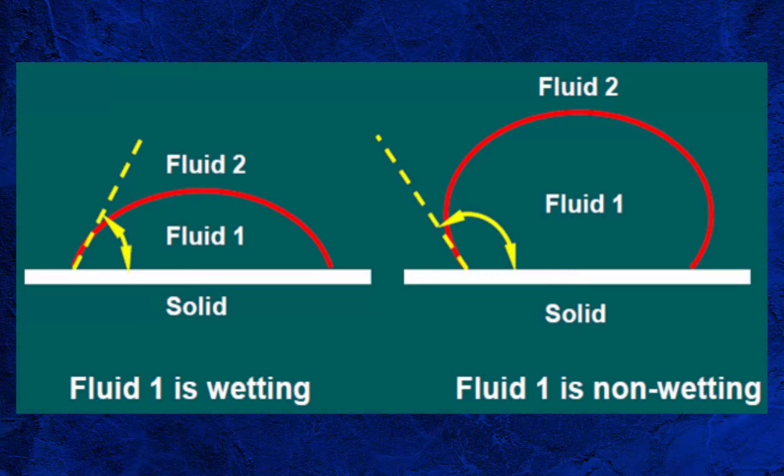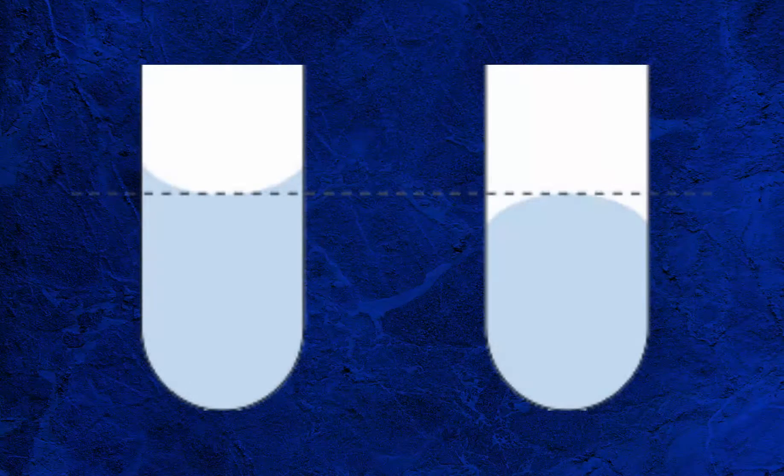Wettability is the tendency of one fluid to spread on or adhere to a solid surface in the presence of other immiscible fluids. When discussing wettability, we are discussing the interaction of two forces: adhesion and cohesion.